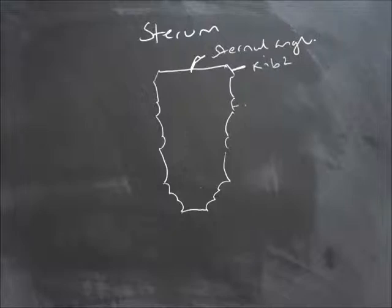Then we have rib 3, which is the first typical rib, and rib 4.